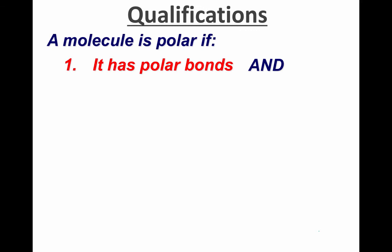So let's review. A molecule will be a polar molecule if it has polar bonds, and if those bonds are arranged asymmetrically. Good luck as you predict your molecules.